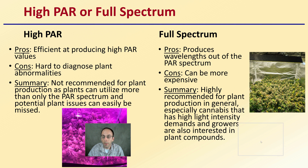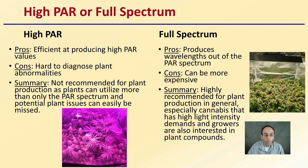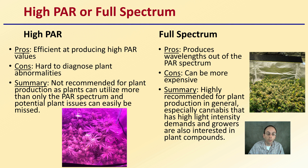There's the great debate between the high PAR and the full spectrum LED lights. The high PAR look like this — that kind of purpley light — and the full spectrum look like this. The pros of high PAR are that they're very efficient at producing high PAR values. However, the cons are they're hard to use to diagnose plant abnormalities. In general, I would not recommend the high PAR lights simply because plant production can utilize more than only the PAR spectrum, and potential plant issues can easily be missed. So yes, plants can be grown well with these lights, but I'd recommend more the full spectrum lights.